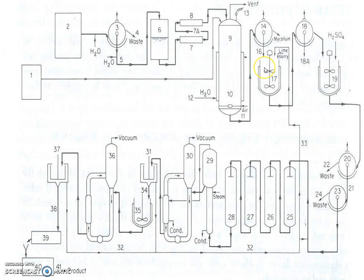Once fermentation is complete, purification and recovery of the citric acid uses the lime-sulfuric scheme, also called the liming process. Mycelium from the organism is removed and sent to lime slurry separation, where liming with milk of lime takes place under agitation. The resultant calcium citrate is then washed and filtered using a rotary drum filter. Sulfuric acid is added to decompose the calcium citrate, forming calcium sulfate, which is filtered off as a waste product using rotary drum filters.